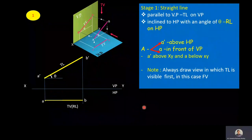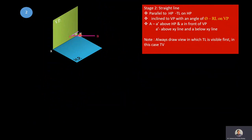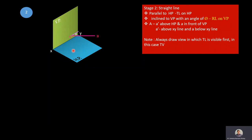We now move to Stage 2: line is parallel to HP and inclined to VP. Because the line is parallel to HP, true length is visible on HP. Because it is inclined to VP, reduced length appears on VP. One end A is above HP and in front of VP, so front view A' is above XY line and top view A is below XY line. Select the view in which true length is visible first — in this case, top view.